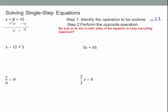For x minus 12 equals 3: the operation is subtraction, so we perform the opposite and add 12 to both sides. Negative 12 and positive 12 cancel, leaving x on the left. And 3 plus 12 is 15, so x equals 15.